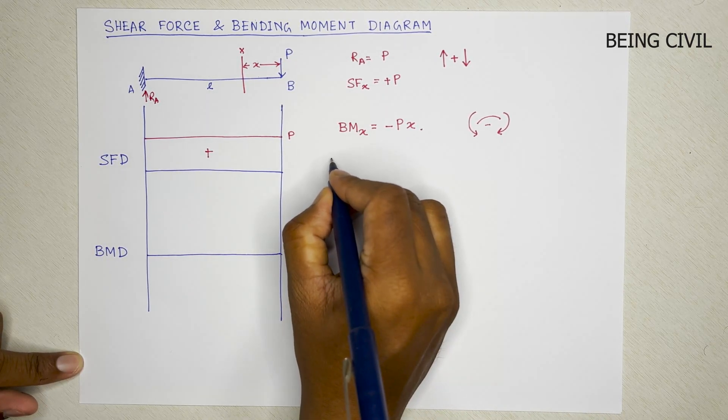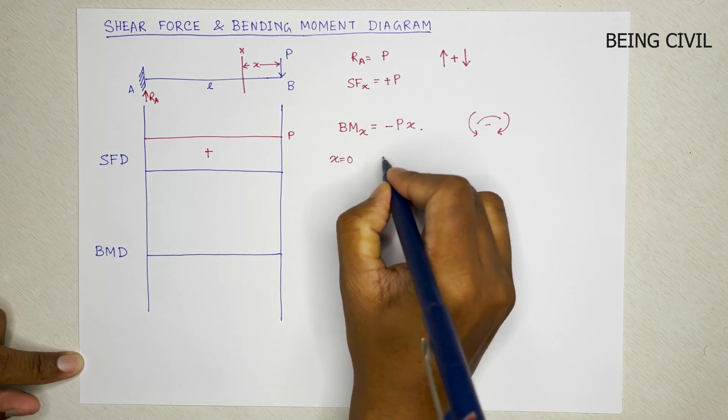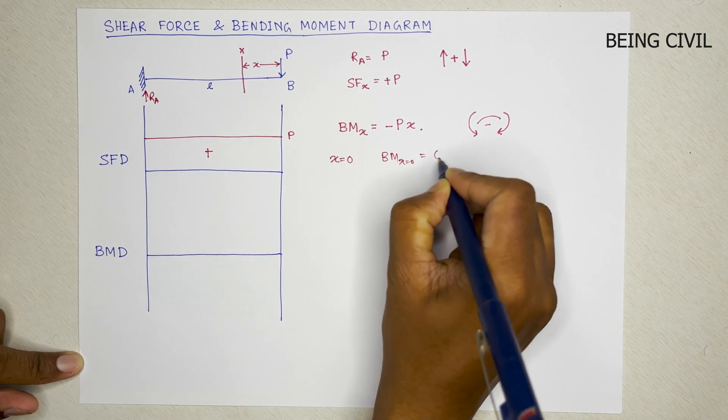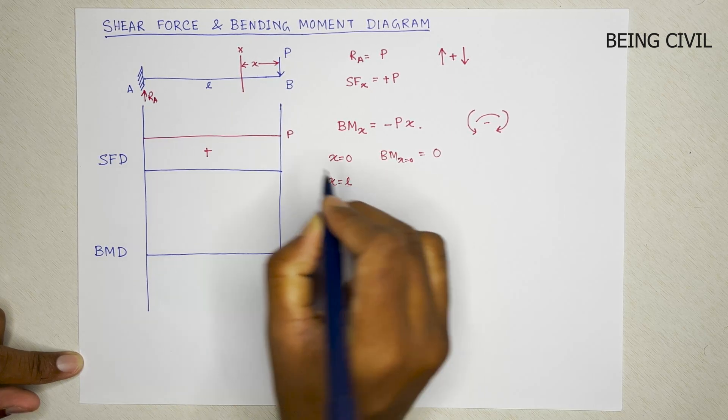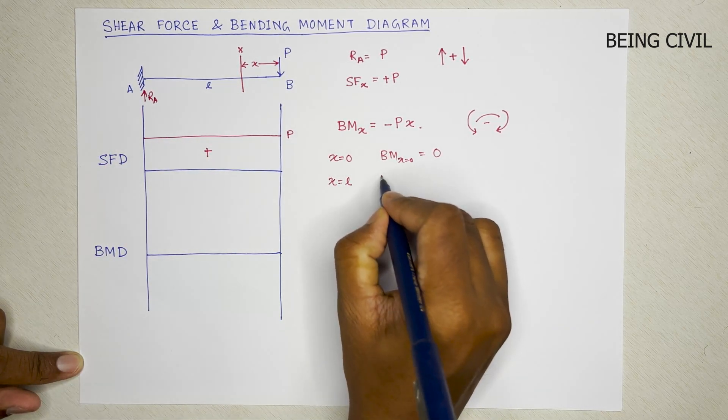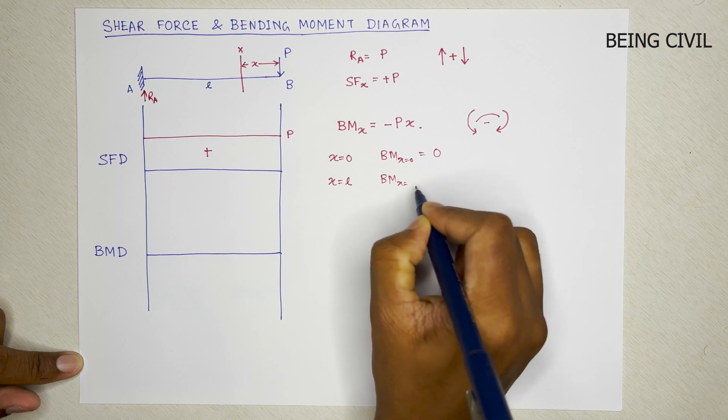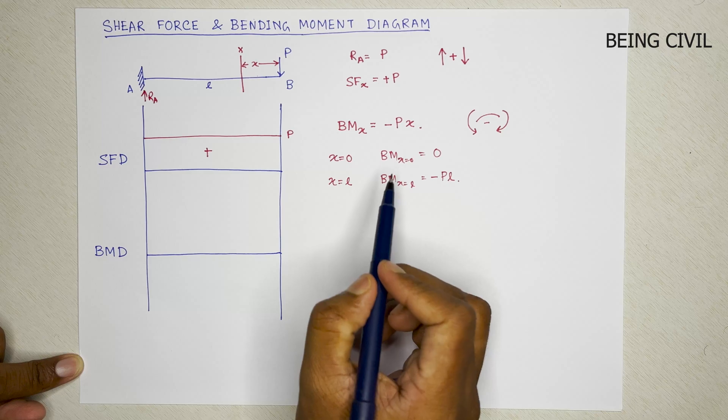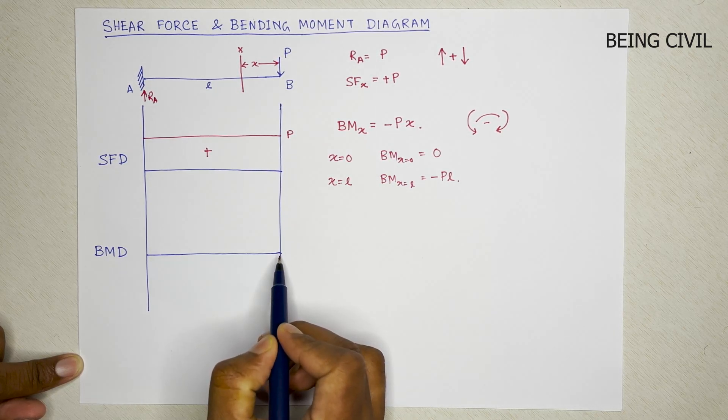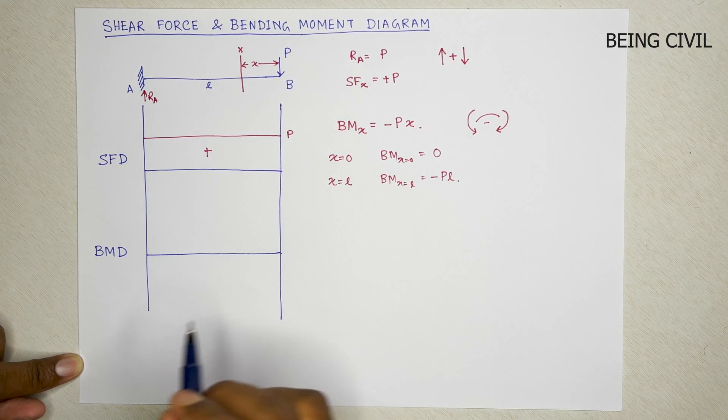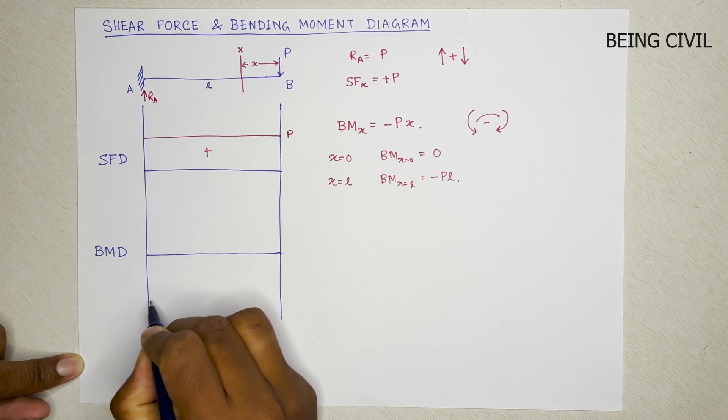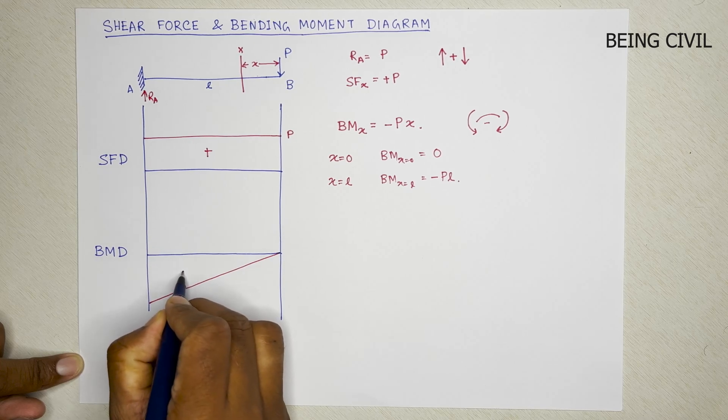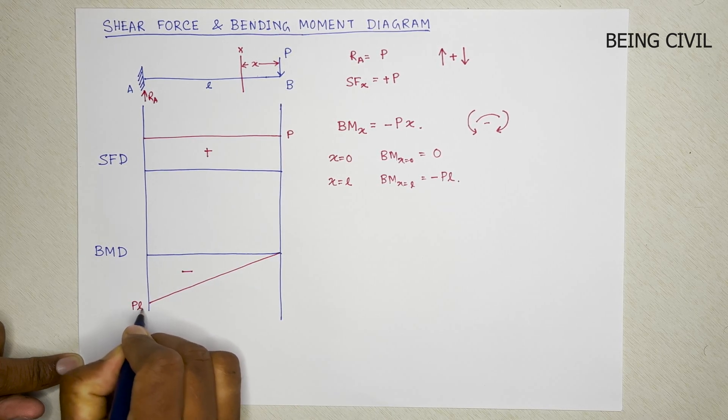So at X equal to 0, that is the free end, the bending moment is 0. And X equal to L, that is the fixed end, bending moment is minus PL. So you see the bending moment is varying from 0 to PL linearly. So the BMD will be like this. This is negative and the ordinate is here PL.